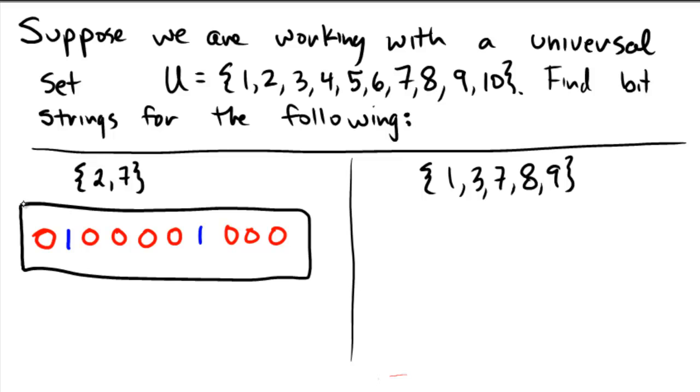the doubleton, is the bit string 0100001000. And these spots correspond to the numbers 1, 2, 3, 4, 5, 6, 7, 8, 9, 10 from the universal set.